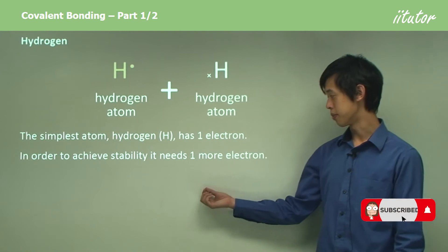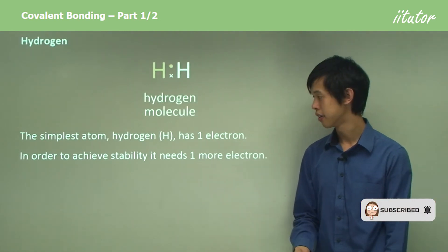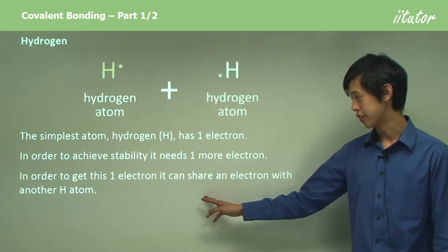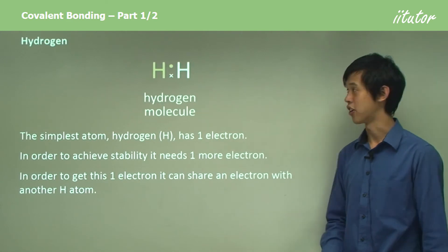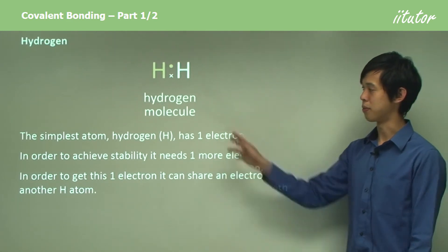In order to achieve stability, only needs one more electron. So in order to get this one electron, it can share an electron with another H atom, as I mentioned before, to form the hydrogen molecule.